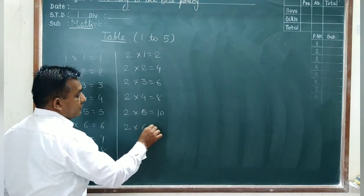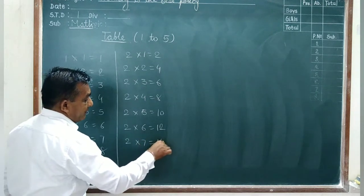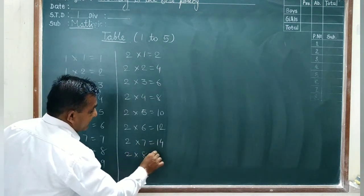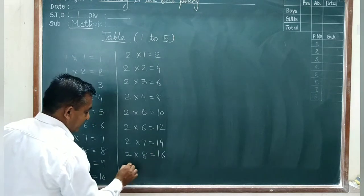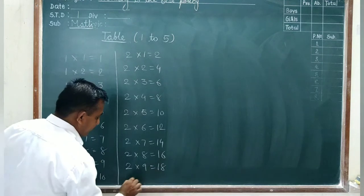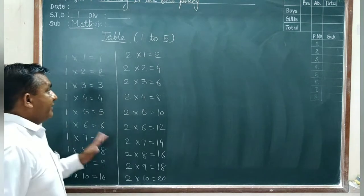2 sixes are 12, 2 sevens are 14, 2 eights are 16, 2 nines are 18, and 2 tens are 20.